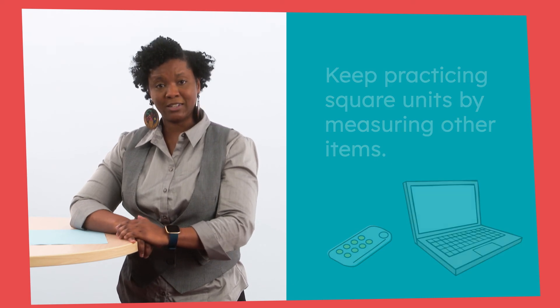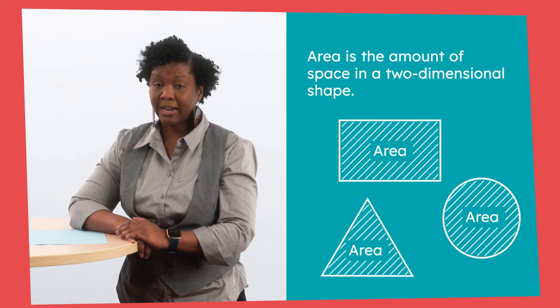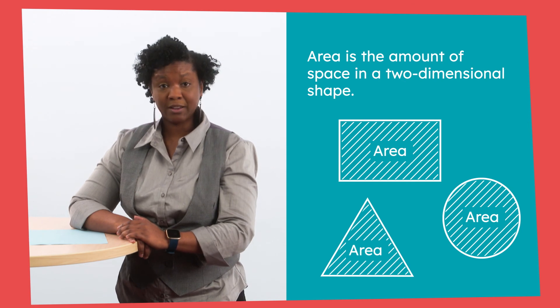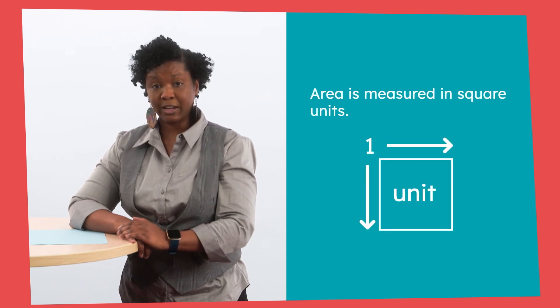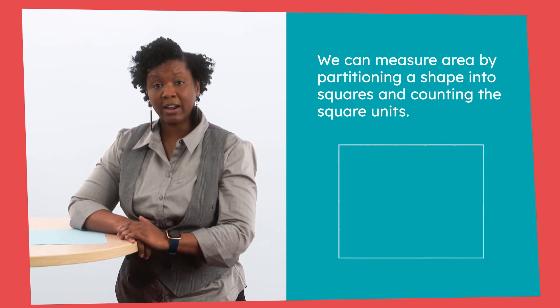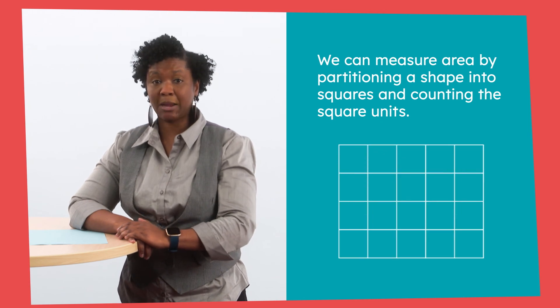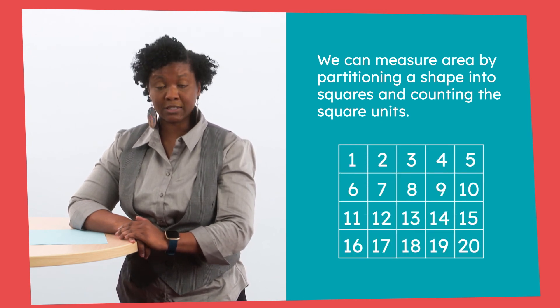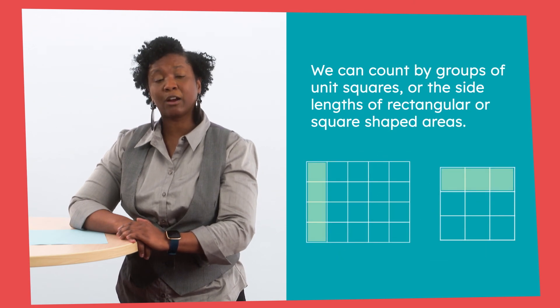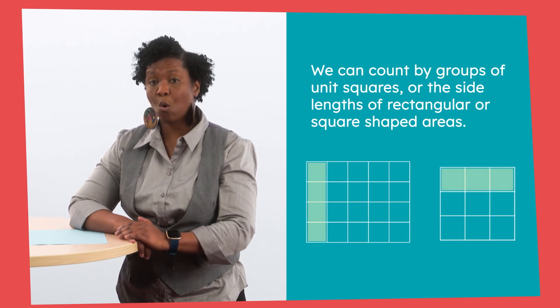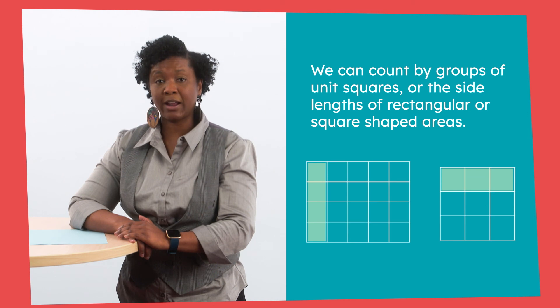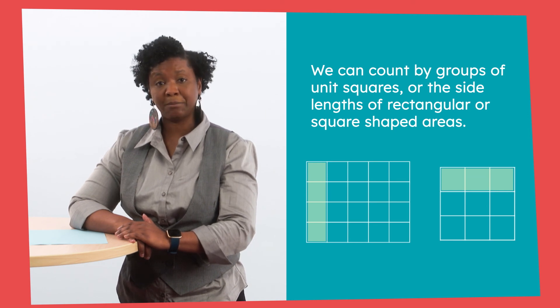So let's review, Mathematicians. Area is the amount of space in a two-dimensional shape. Area is measured in square units. We can measure area by partitioning a shape into squares and counting the square units. We can also count by groups of unit squares or the side lengths of rectangular or square-shaped areas.